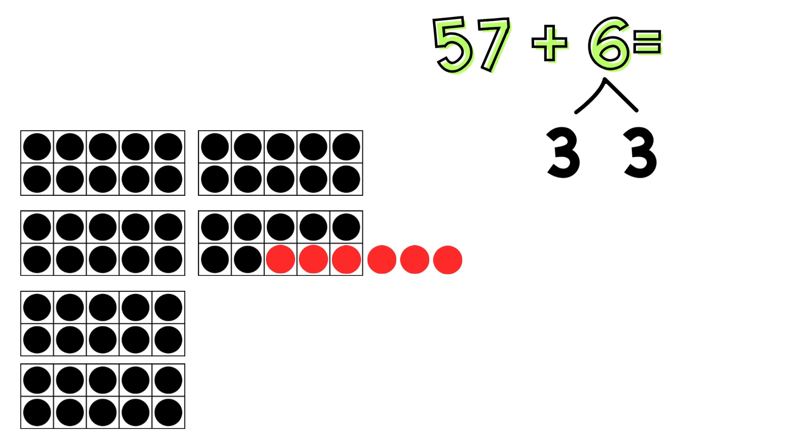Now we can write our new equation. Look at how many complete 10 frames we have. Write that number down. We have 6 complete 10 frames, so you should have written 60. Now you just need to finish the equation. Do you know what we add to 60? Here's a hint. Look at the extra chips outside the 10 frames. Finish writing the equation and solve it.